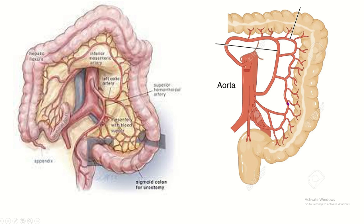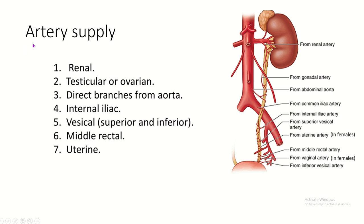The arterial supply of the ureter comes from many sources, since the ureter is a long tube. From the upper part, it receives supply from the renal artery. In the lower part, it receives supply from the arteries of the urinary bladder, uterus, vagina, and rectum. In the middle part, it receives supply from nearby arteries.